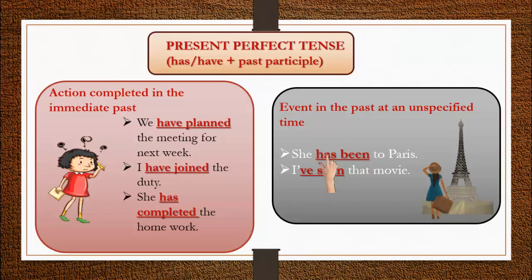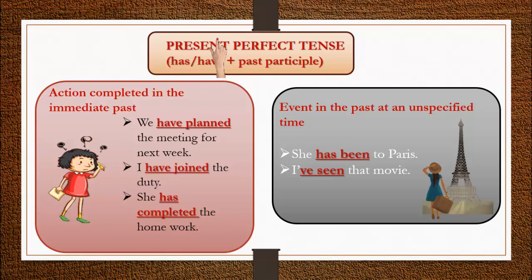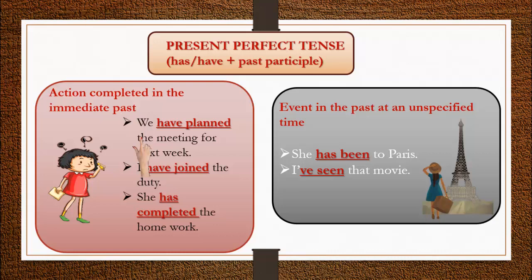Next is present perfect tense. The verb formation is: has or have plus past participle. 'Has' is used for he, she, it — third person singular. 'Have' is used for I, we, you, they. We use present perfect tense for actions completed in the immediate past — just now. For example: 'We have planned the meeting for next week.' 'We have joined the duty' — just now.